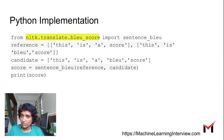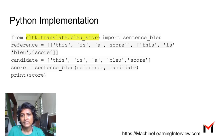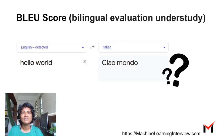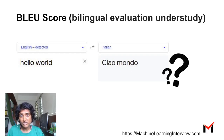BLEU score is easy to use in your code because there is already a library implementation. You can import sentence_bleu from nltk.translate.bleu_score and simply provide the reference and candidate sentences to get the BLEU score. To summarize, BLEU score is a popular way of evaluating how close a candidate sentence that your model generated is to a reference sentence. It is popularly used for machine translation but can be used for many other applications.